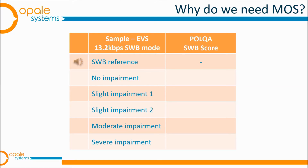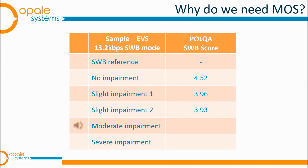The sample speech recordings are played multiple times at progressively degraded quality levels: starting from the clean reference, then with increasing packet loss and jitter applied. The phrases used are: 'The frosty air passed through the coat' and 'The hogs were fed chopped corn and garbage,' repeated across each quality level to illustrate the audible impact on MOS scores.